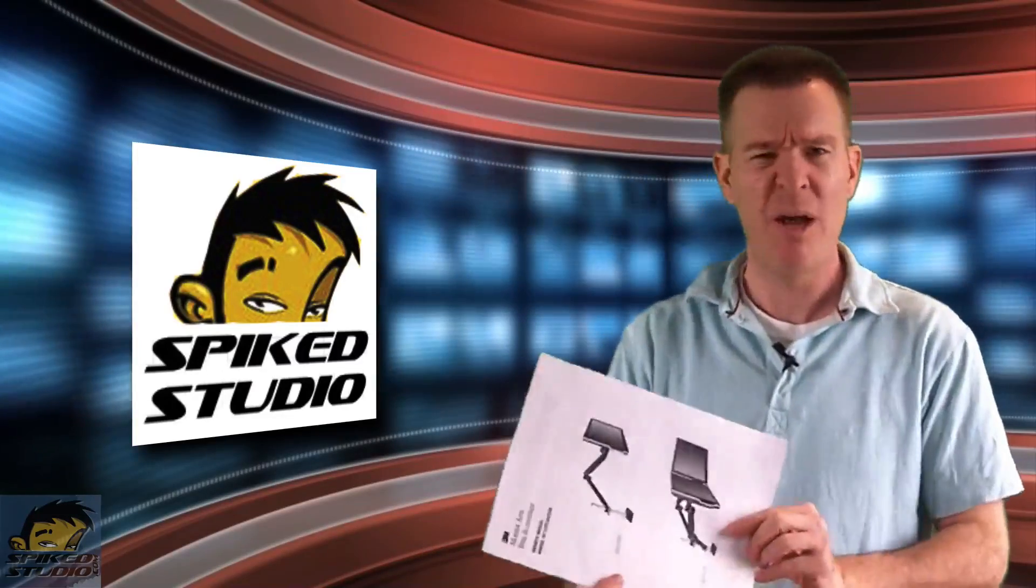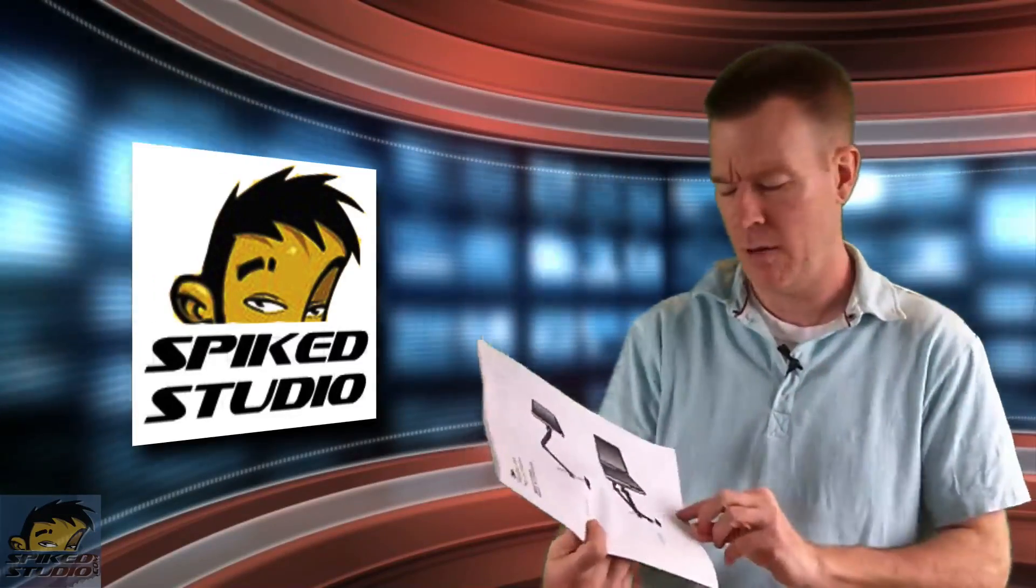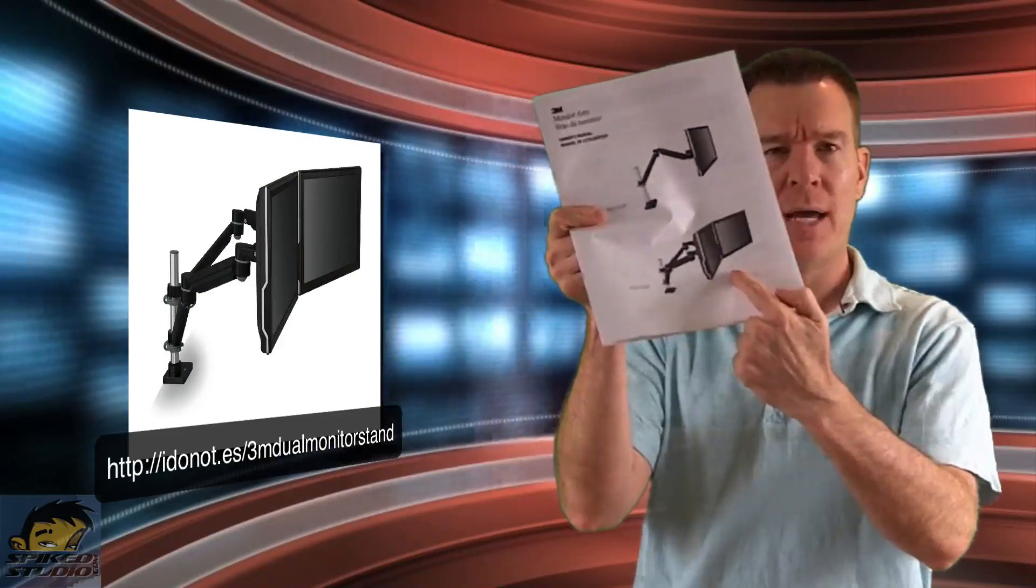To give you an idea of what we put together, and we may show the finished product or putting it together, is a dual monitor stand that 3M makes. This is model MA260MB. There is a 240MB, which is a single stand arm. This one sits on your desk. It provides the ability for you to have two monitors there. You can run the cables down the back. It gives you a little flexibility with easy snap-on and snap-off.